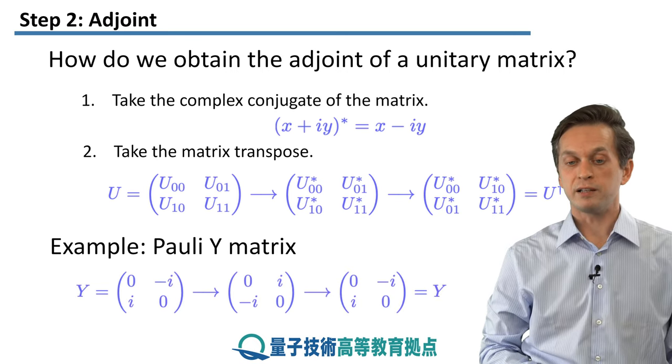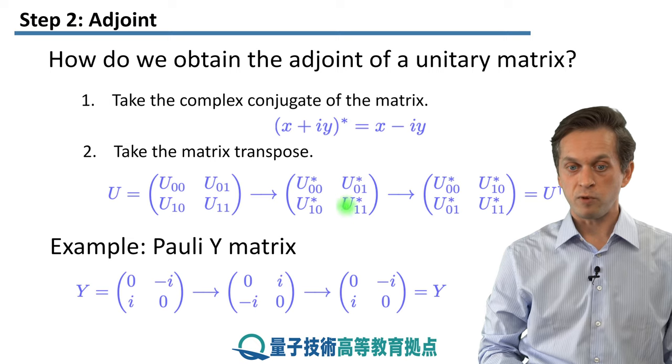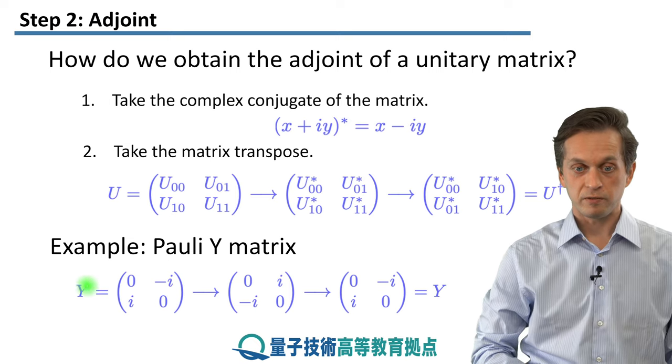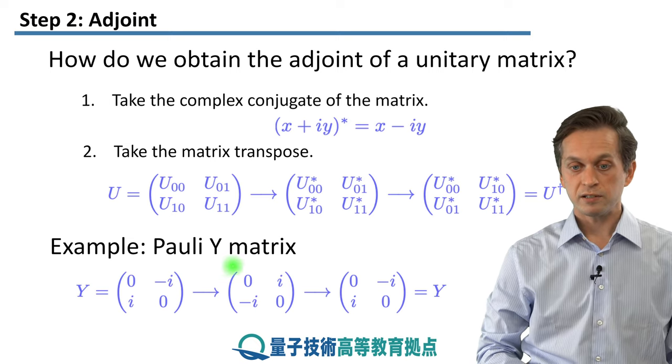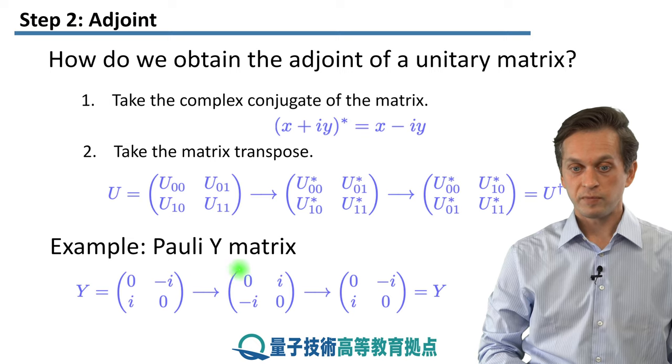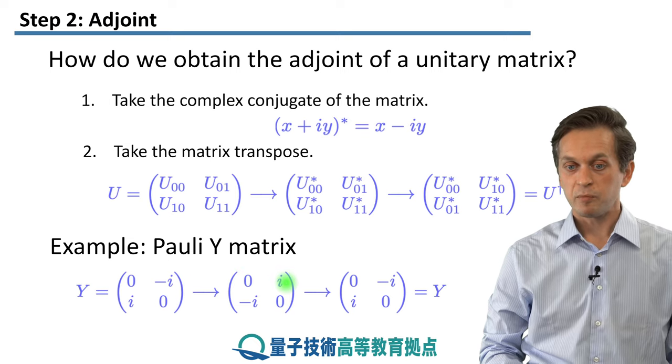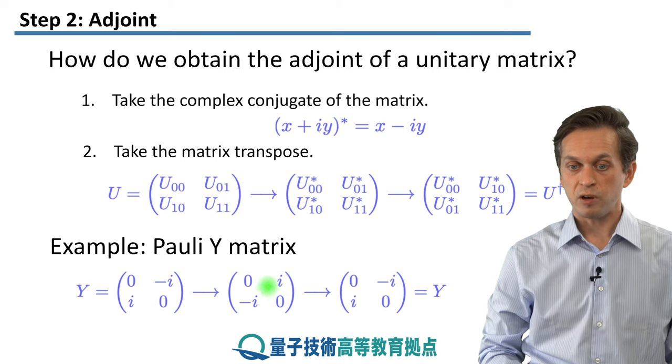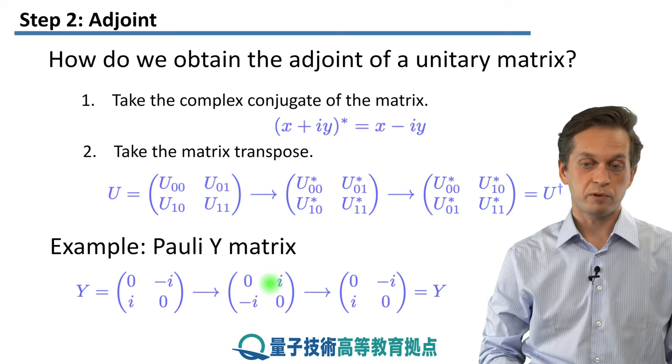In particular, if we look at an example given by unitary Pauli Y matrix, written as this. First, we take the complex conjugate. So 0 is just 0, but the signs in front of these off-diagonal elements change, because they're pure imaginary.